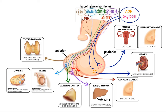Hormones produced by the hypothalamus and pituitary play a crucial role in regulating metabolism, growth, and reproduction. Because of that, many drugs have been developed to either mimic or block their effects in order to treat various endocrine disorders. Let's take a closer look at how these drugs work to produce their therapeutic effects, starting with agents targeting the thyroid gland.